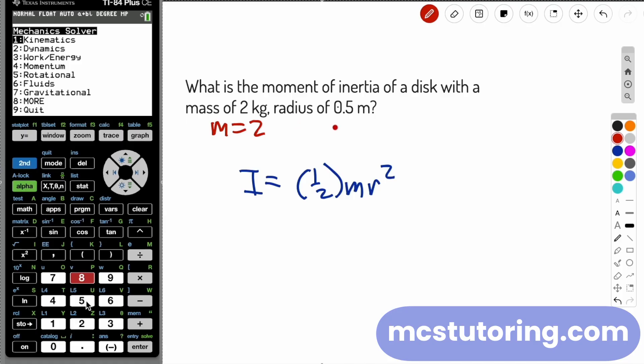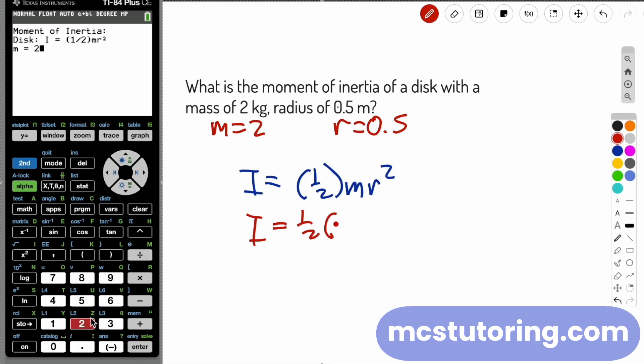Here's where it gets really helpful. Rotational motion. Students hate this stuff because the formulas are confusing and the numbers get messy. Let's find the moment of inertia for a solid disk. 0.25 kilogram meters squared. And check this out.